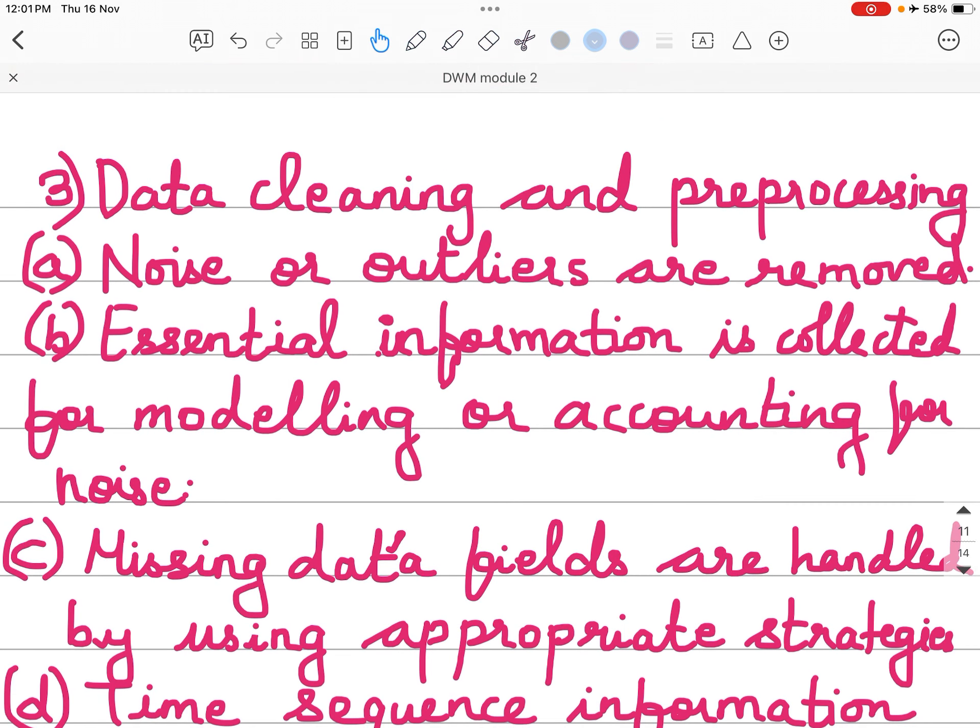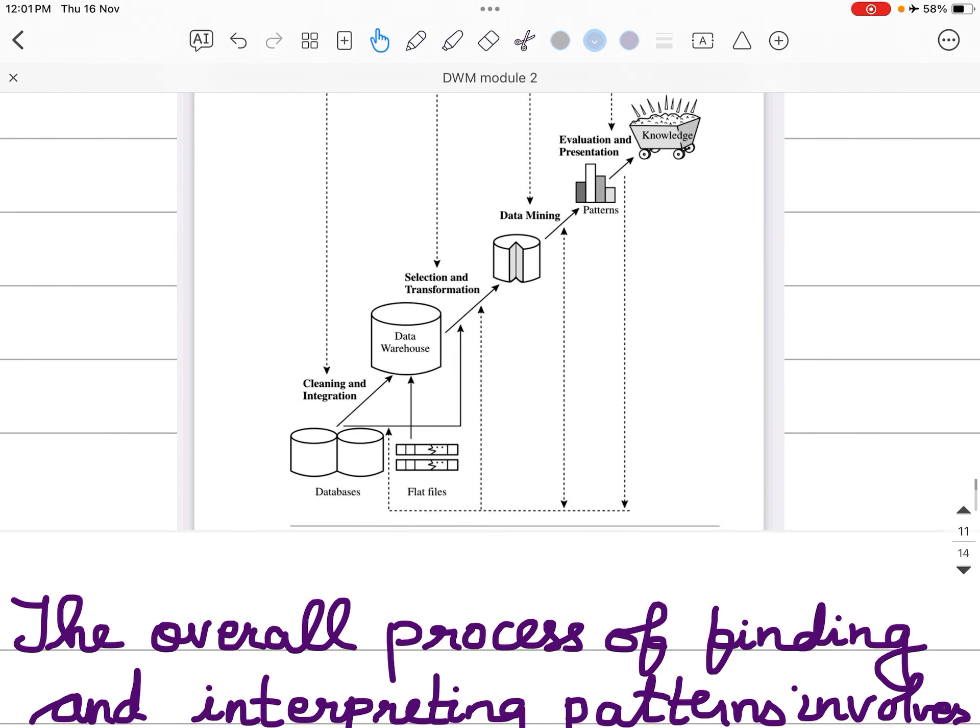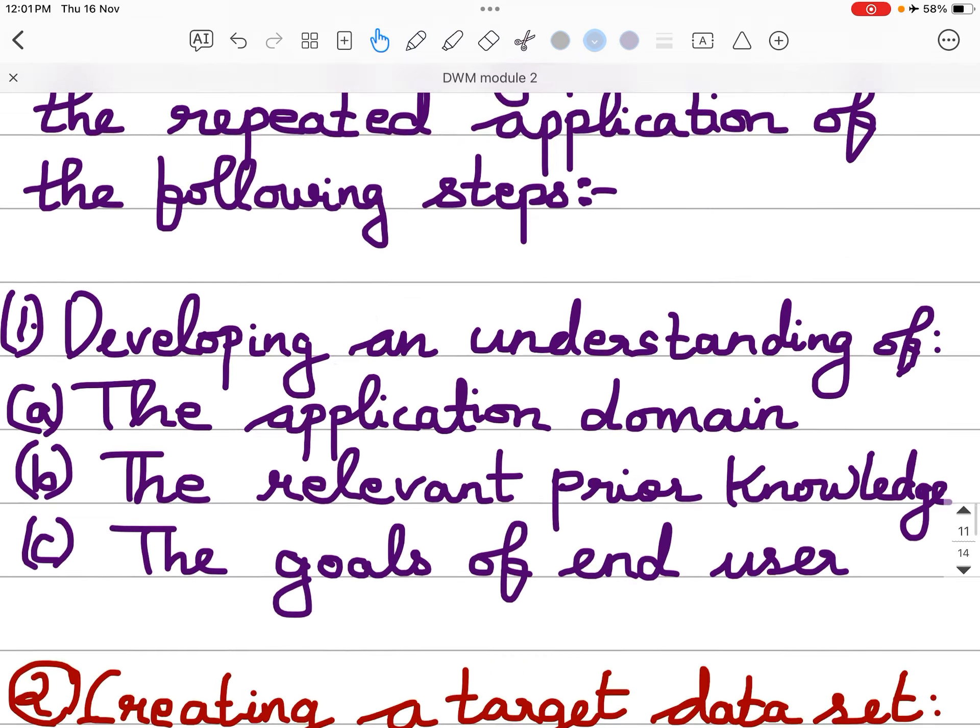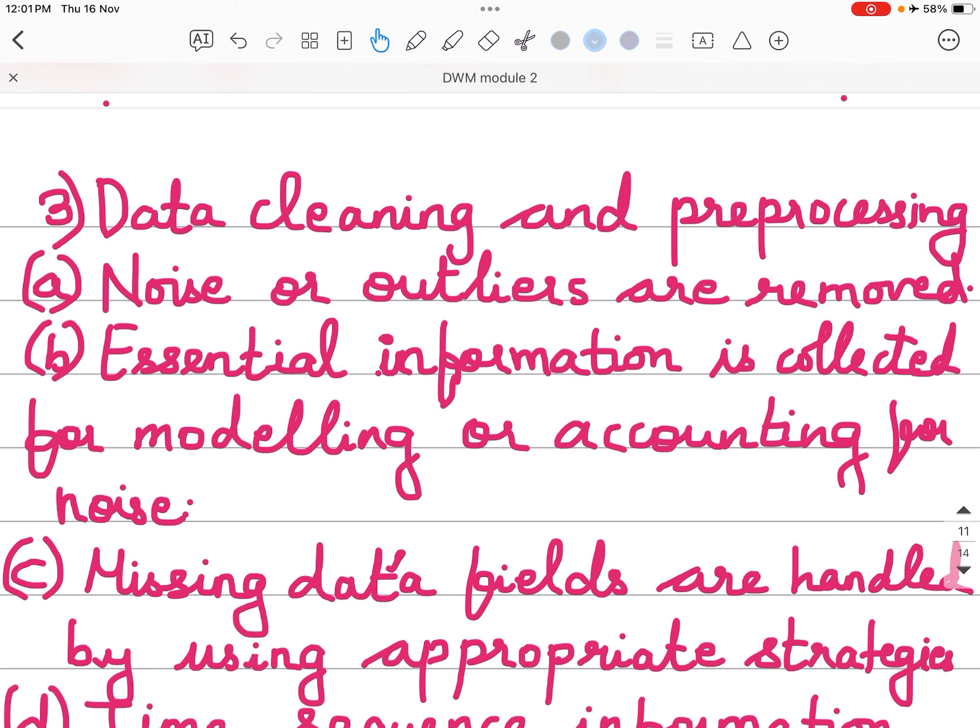Then you have data cleaning and preprocessing. We saw that there was cleaning and integration. Noise or outliers are removed. The noisy data and the outliers which are present in the database will all be removed. Essential information is only collected. Missing data, noisy data, outliers, all these will be removed and only the essential data will be collected.